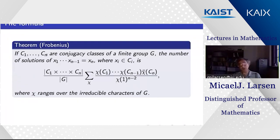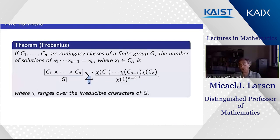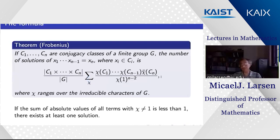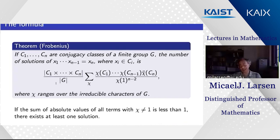In our case n=3 (classes C₁, C₂, and asking about C₃), so there is a factor of χ(1) in the denominator. The trivial character χ=1 always contributes 1 to this formula. The question is whether the non-trivial characters together add up to very much. If the absolute values of all terms other than the trivial character sum to less than one, the χ=1 term dominates and the whole expression must be non-zero.